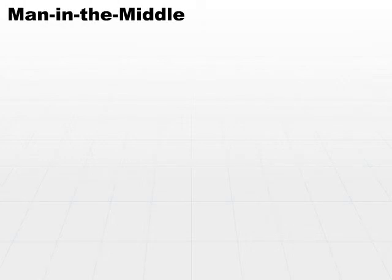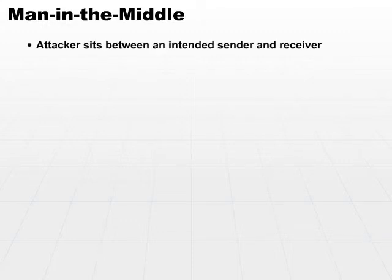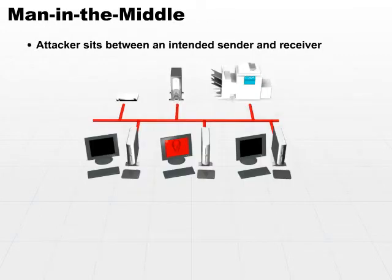Another attack called the man in the middle — this is the one we normally refer to as a MITM attack. The attacker sits in between an intended sender and receiver. He would actually be on the network and intercept any messages that came in from the sender to the receiver and back and forth.